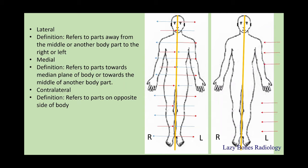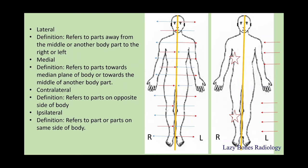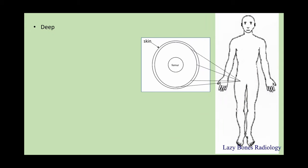Contralateral is a unique form of lateral; this refers to parts on the opposite side of the body. For example, if you get hit on your left-hand side but you break your right ribs and right leg, this is known as the contralateral side of the impact. Ipsilateral refers to parts on the same side of the body. Going back to our example, if you get hit on the left-hand side and break your left ribs and left leg, this is the ipsilateral side. It's very important not to confuse these two: contralateral is the opposite side, ipsilateral is the same side.